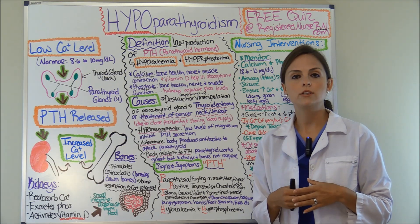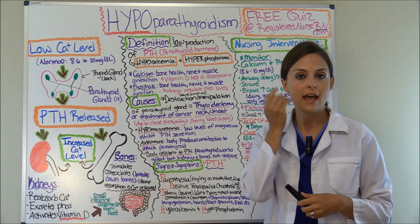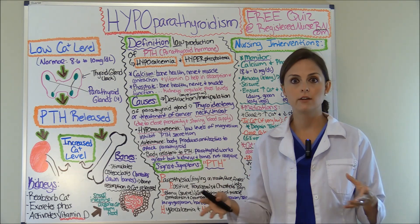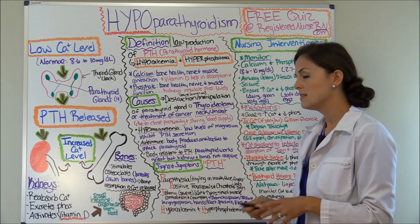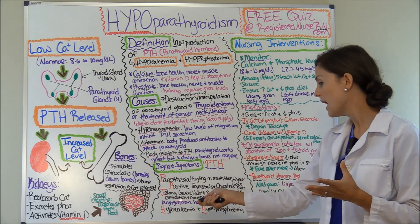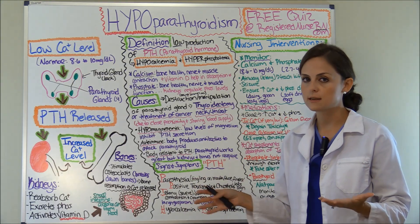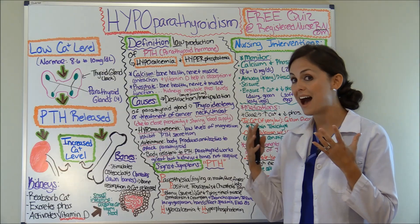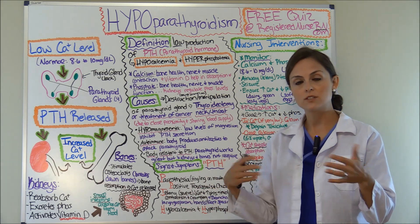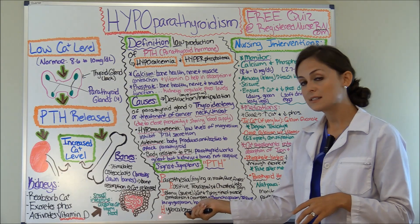Chvostek's sign is where you elicit a response in the facial nerve. Go to the angle of the jaw and tap on the masseter muscle; on that same side you may see twitching of the nose or lips, indicating a severely low calcium level. T in the mnemonic is tetany — involuntary muscle contraction and cramping due to low calcium and high phosphate. This can lead to bronchospasm, seizures, laryngeal spasms, hand and foot spasms, and EKG changes. Airway is a major concern with these patients.